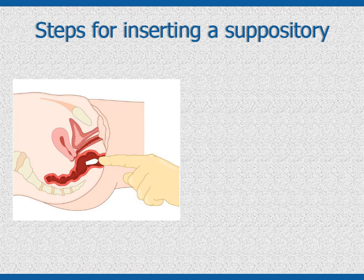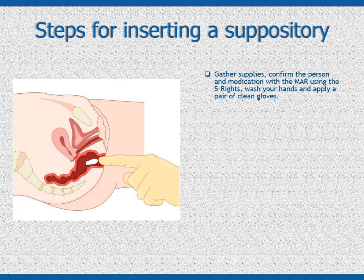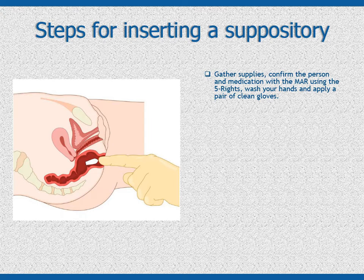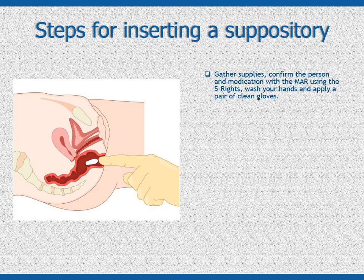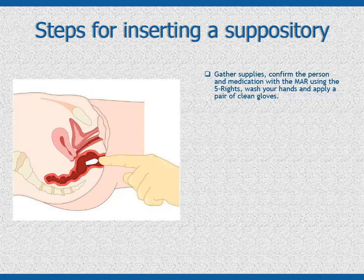Steps for inserting a suppository. Gather all of the supplies you will need: the medication, several 4x4 gauze pads or clean paper towel, clean gloves, linen saver pad, water-soluble lubricant. Be sure there is a toilet nearby or have a bedpan ready, the MAR, and the person receiving the medications. For each person and medication, match the person and the medications to the person's name and the medications that are due in the MAR.